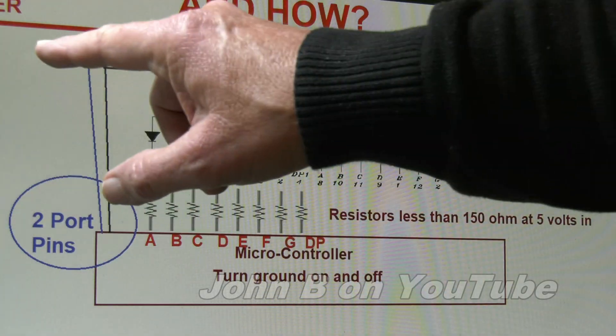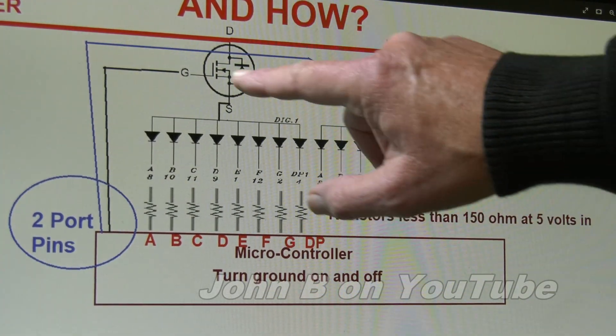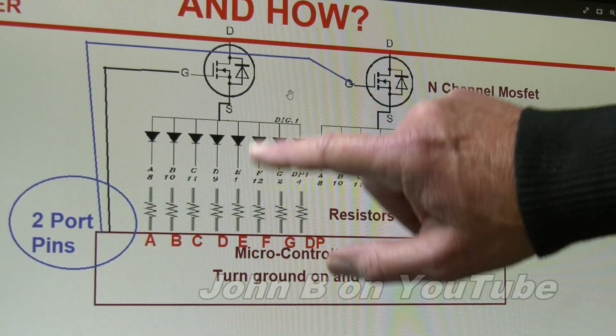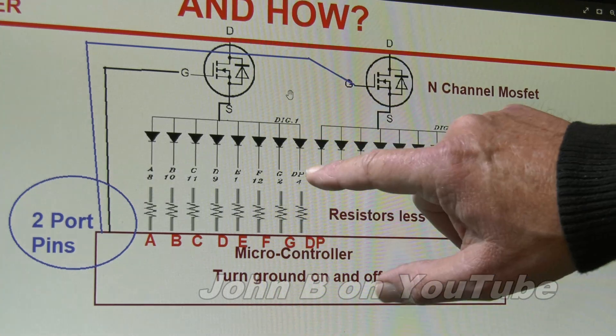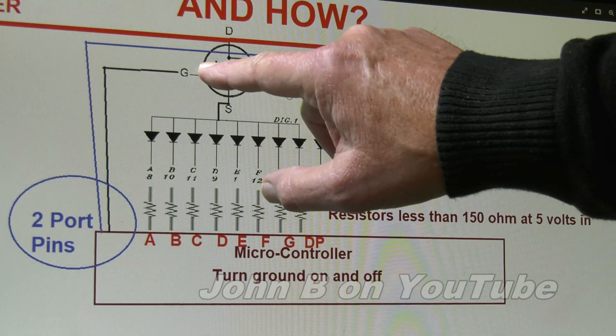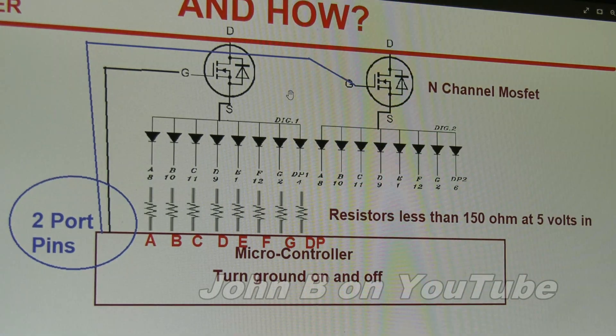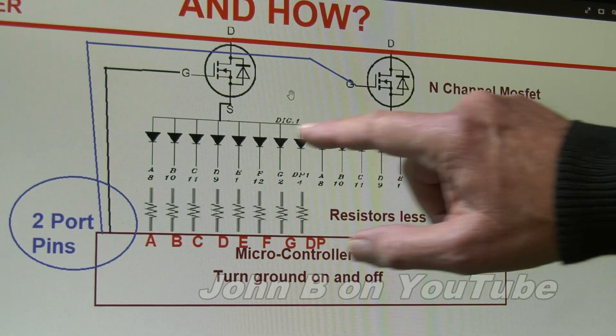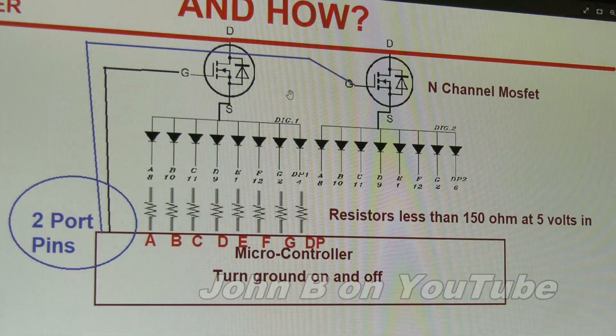That's how you connect the power to two N-channel MOSFETs. Two more port pins, and you turn this segment on first, and control what character you want to see. And then turn this one off, then turn this one on. That sounds straightforward. All right, so how quickly do you have to do this? Let me go back to the PCB.